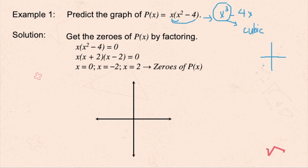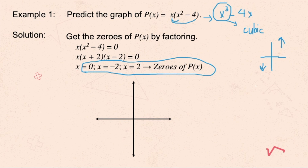A cubic function has an S-shaped graph that starts in the third quadrant and ends in the first quadrant. Using the zeros −2, 0, and 2 and connecting the plots while considering the cubic shape, the resulting graph starts in the third quadrant, passes through −2, then 0, then 2, and ends in the first quadrant.